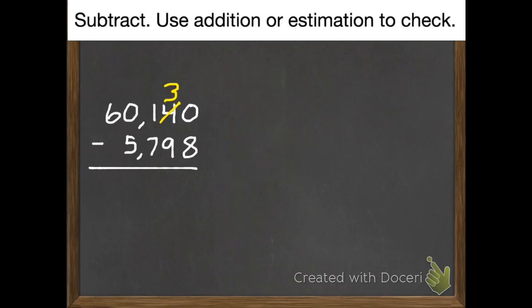So now there are only 3 tens. We turn that 1 ten we borrowed into 10 ones. Now I can do my ones. 10 subtract 8 equals 2.